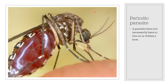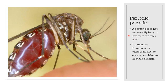A parasite does not necessarily have to live on or within a host. It can make frequent short visits to its host to obtain nourishment or other benefits. Such a parasite is called a periodic parasite. The best example of a periodic parasite is the female mosquito, which sucks blood from the vertebrate host. The host's blood is required for egg development — without a blood meal, the female mosquito will not have sufficient protein to lay her eggs.